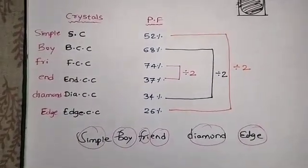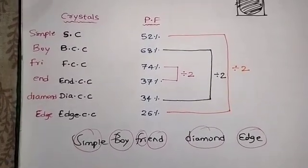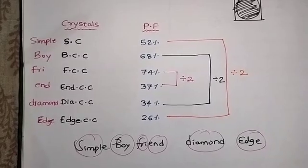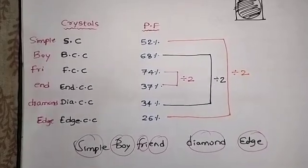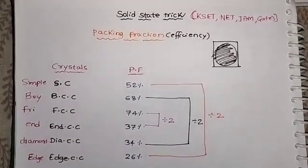Simple, this is my trick: simple boy friend having diamond edge. From this you can easily remember these packing fractions. Please subscribe to my channel GPSTR CTT. Thank you friends.